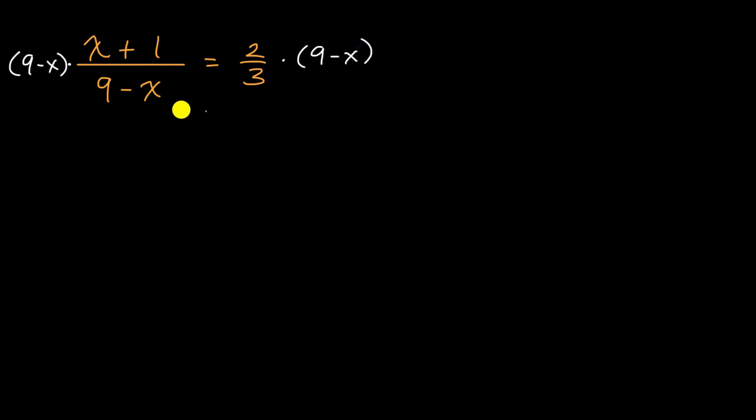Now when you do that, it's important that you then put the qualifier that x cannot be equal to the value that would have made this denominator zero. Because clearly, if somehow you do all this algebraic manipulation and you got x is equal to nine, that still wouldn't be a valid solution, because if you were to substitute nine back into the original equation, you'd be dividing by zero in the denominator. So let's just put that right over here. X cannot be equal to nine. And so then we can safely move ahead with our algebraic manipulations.